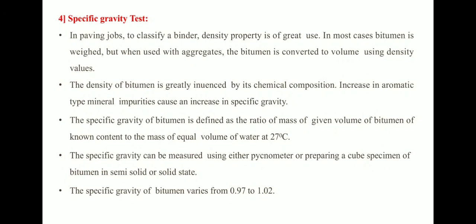The fourth test is the specific gravity test. In paving jobs, density properties are very useful for classifying a binder. Bitumen is usually weighed, but when used with aggregates it is converted to volume using density values. The density of bitumen is influenced by its chemical composition; an increase in aromatic-type mineral impurities causes an increase in specific gravity. Specific gravity is defined as the ratio of the mass of a given volume of bitumen to the mass of an equal volume of water at 27°C, and typically varies from 0.97 to 1.02.